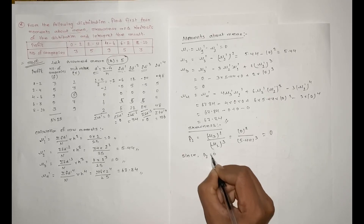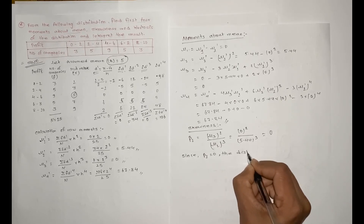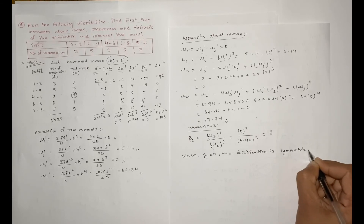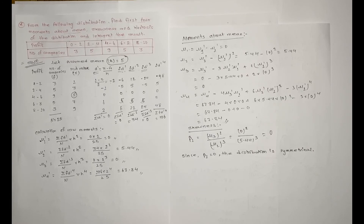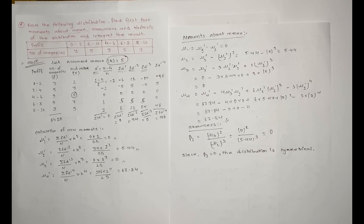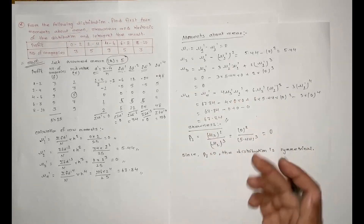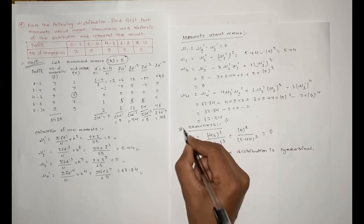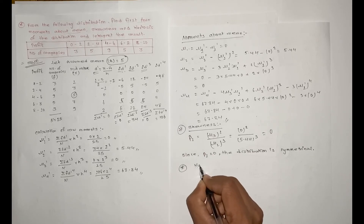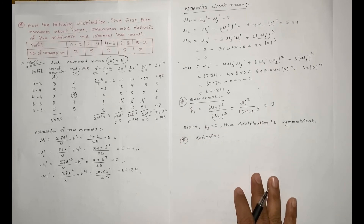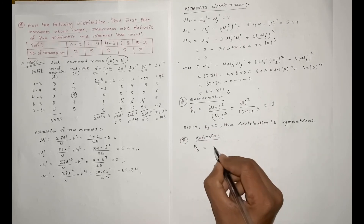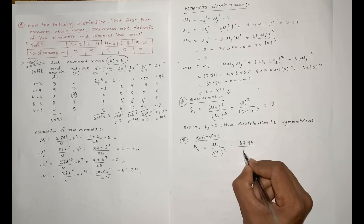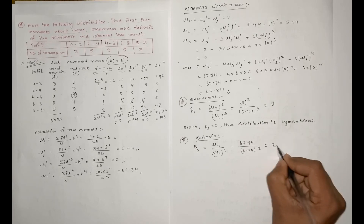Since β₁ = μ₃² / μ₂³ = 0, the distribution is symmetrical. The μ₃ value is 0, confirming the distribution is symmetrical. β₂ = μ₄ / μ₂² = 67.84 / (5.44)² = 67.84 / 29.59, which gives the result 2.29.